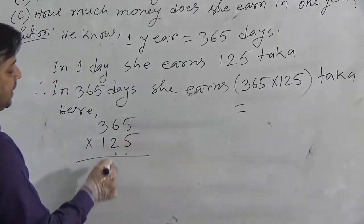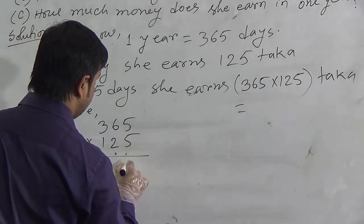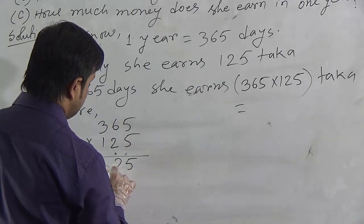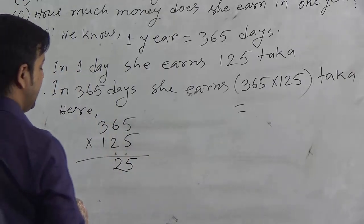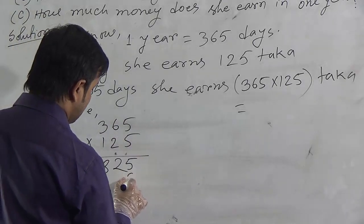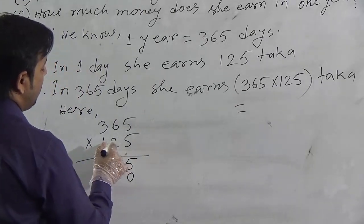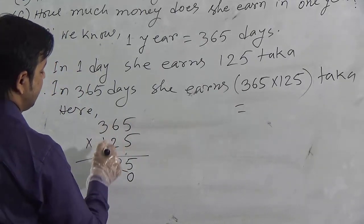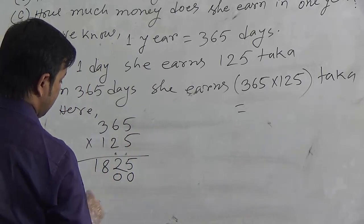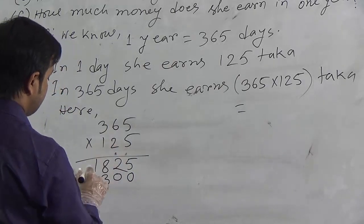At first we have to multiply by ones place. So, we can say 5 fives are 25. 2 left, 5 sixes are 30 and 2, that is 32. 5 threes are 15 and remaining 3 is 18. Now, we have to multiply by 12. We have to multiply 365 by 2. 2 fives are 10. 1 left, 6 twos are 12 and 1, 13. 1 left again. 3 twos are 6 and 1, 7.